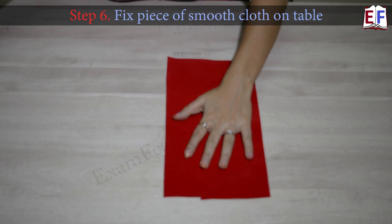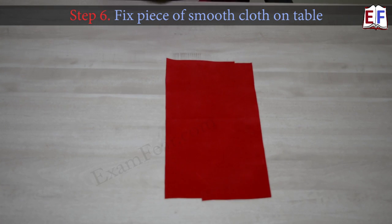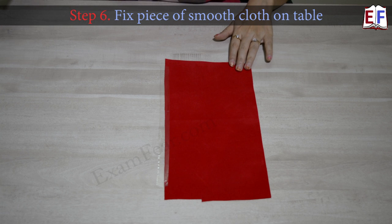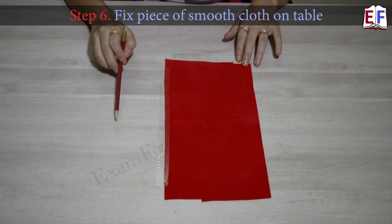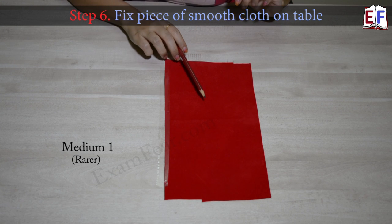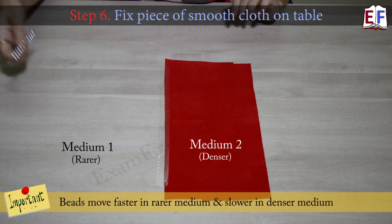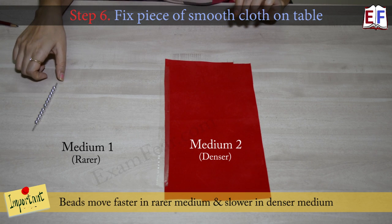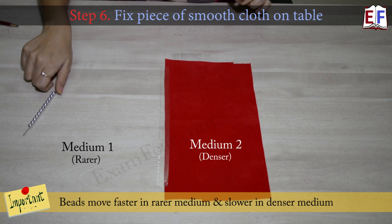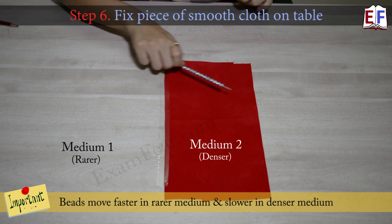We will make use of a long strip of cello tape. You have two different medium. This is your medium one, this is your medium two. So now it is expected that these beads would not move with the same speed on this surface and on this surface.